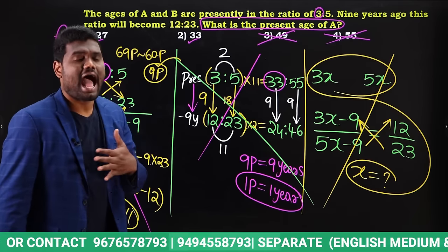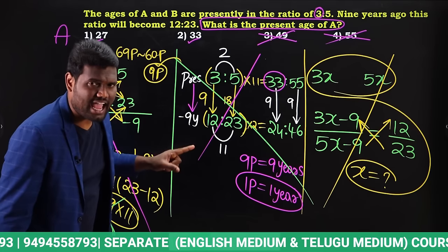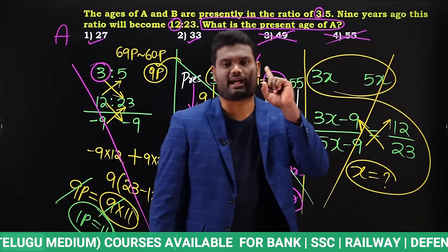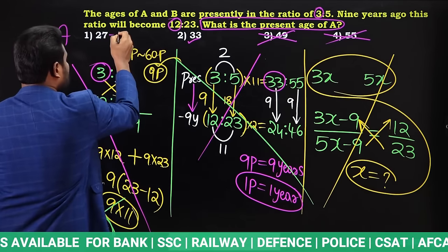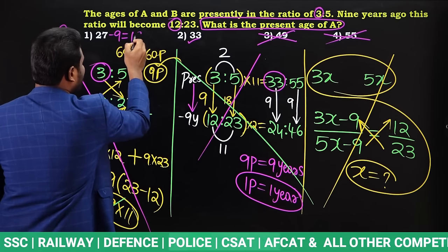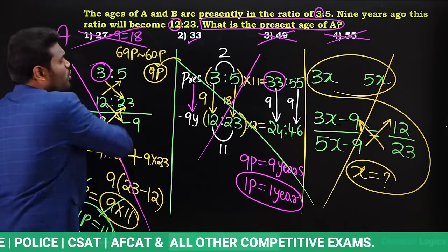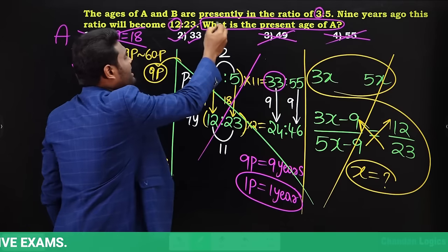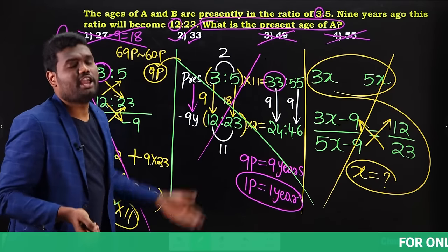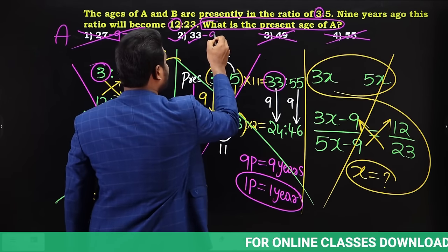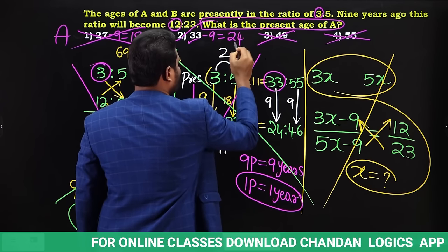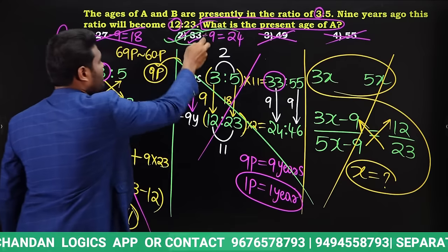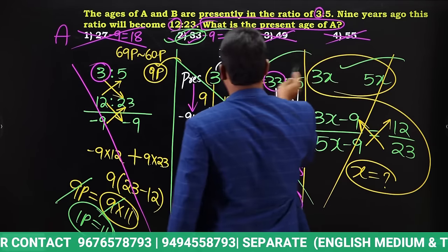We now use the second condition: nine years ago the ratio was 12:23, so A's age nine years ago must be a multiple of 12. From 27: 27−9 = 18, and 18 is not a multiple of 12 — eliminated. From 33: 33−9 = 24, and 24 is a multiple of 12 — correct! So the answer is 33 years, solved without pen and paper.